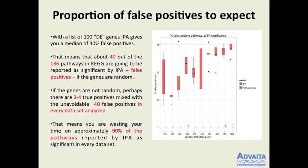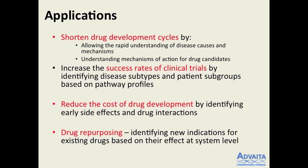Here are two slides on applications. This technology can shorten the drug development cycle by allowing rapid understanding of disease causes and mechanisms. It can help you understand the mechanism of action for drug candidates. It can increase the success rates of clinical trials by identifying disease subtypes and patient subgroups based on pathway profiles — much more meaningful and powerful than clustering based on gene expression alone. It can also reduce the cost of drug development by identifying early side effects and drug interactions.